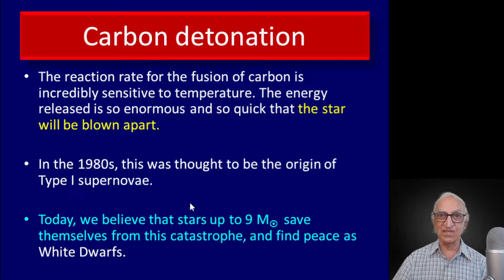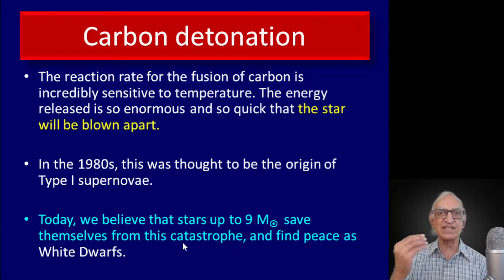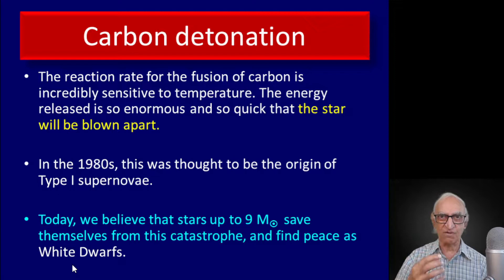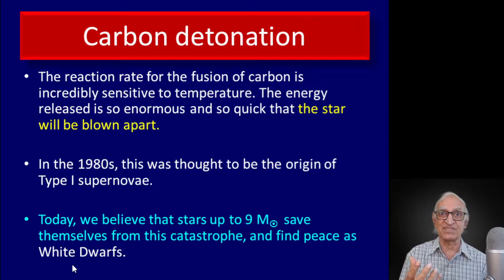Today we don't believe that, and we don't believe that for very good observational reasons. We now have concrete evidence that stars up to 9 solar masses — let alone 3 solar masses — save themselves from this catastrophe of an explosion due to runaway fusion reaction and find themselves as white dwarfs. Today we know from observation that 3, 4, 5, 7, 8, 9 solar mass stars somehow save themselves from this carbon detonation catastrophe.